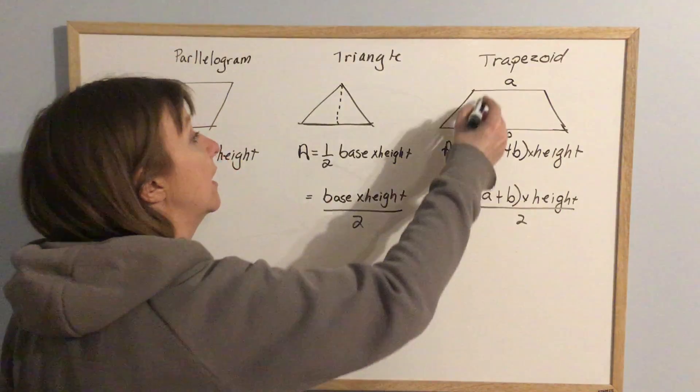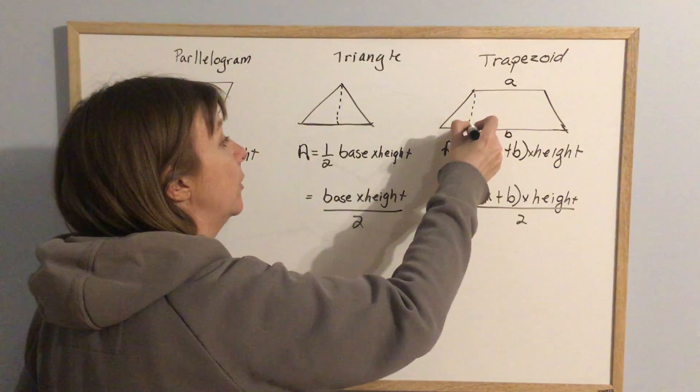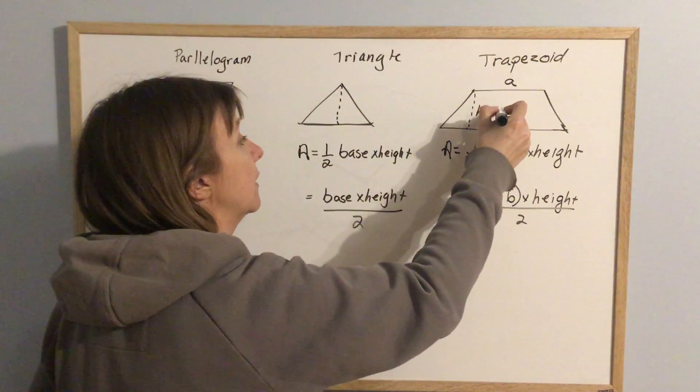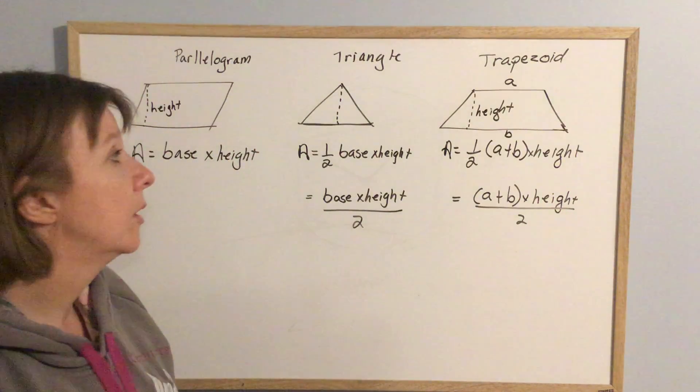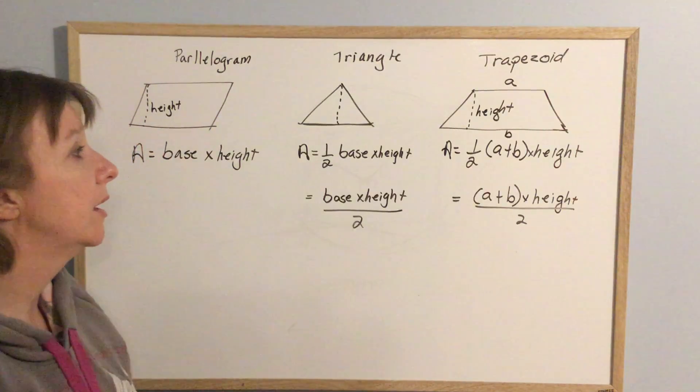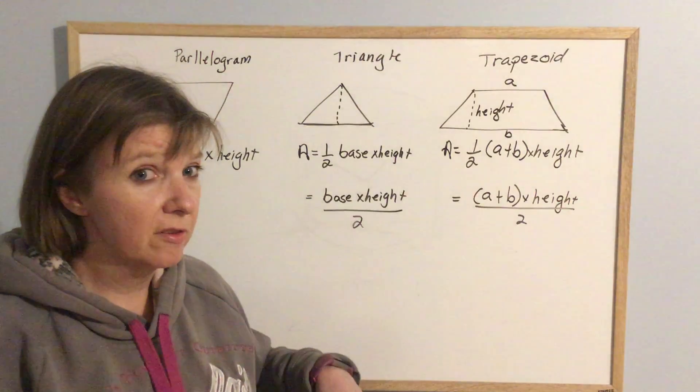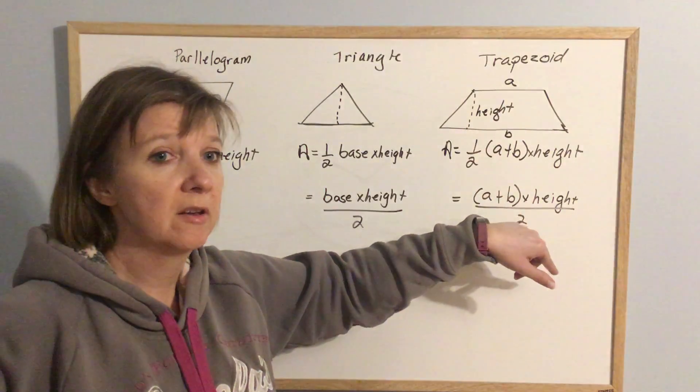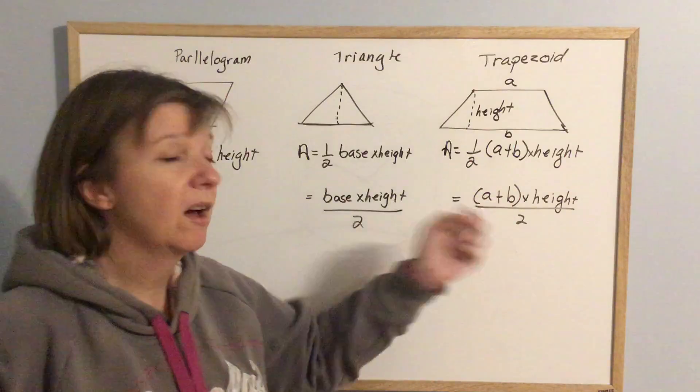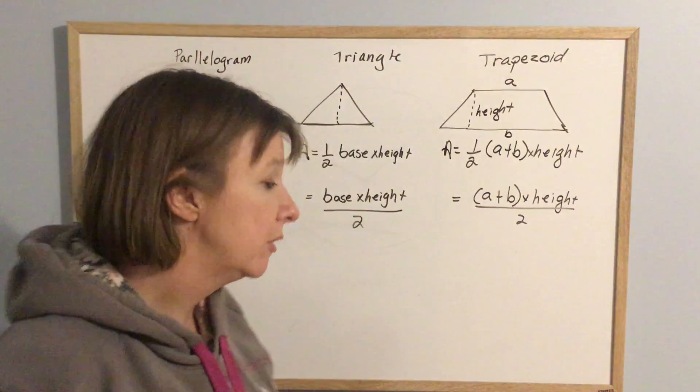And height, again, always. Height is always talking about straight up and down. All right? So a trapezoid, order of operations is going to be important here. You have to add your top and your bottom, multiply it by your height, and then either multiply it by half or divide by two, whichever you decide to do.